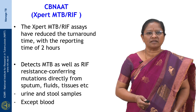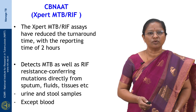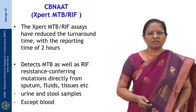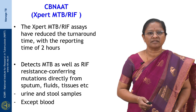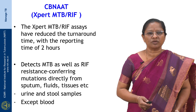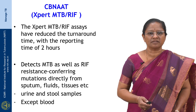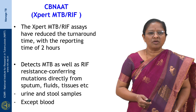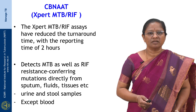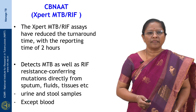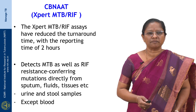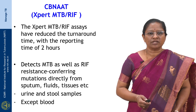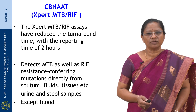The Xpert MTB/RIF has reduced turnaround time, with reporting in 2 hours compared to conventional methodologies which require weeks to months for detection and drug resistance reporting. In addition to detecting MTB, it also detects rifampicin resistance mutations, and can be used for detection of TB and rifampicin resistance in biological specimens like sputum, fluids, and tissues. There is considerable evidence for its use in urine and stool samples as well; however, blood is not an ideal specimen. The program currently recommends testing of sputum, fluids, and tissues using GeneXpert.